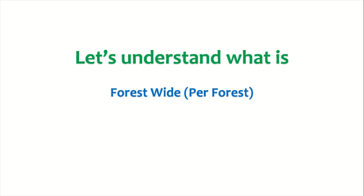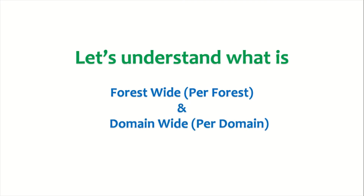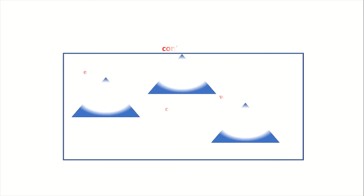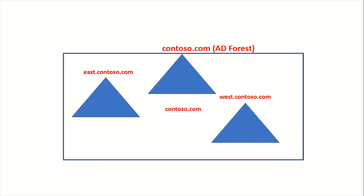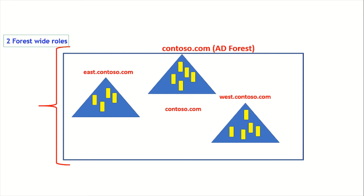Consider the forest contoso.com with three domains: east.contoso.com, contoso.com, and west.contoso.com, each with domain controllers. We have two forest-wide roles — schema master and domain naming master. There will be only one schema master for the entire forest, and it can be on any domain controller in any domain — east.contoso.com, west.contoso.com, or contoso.com.